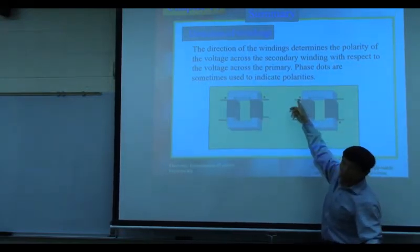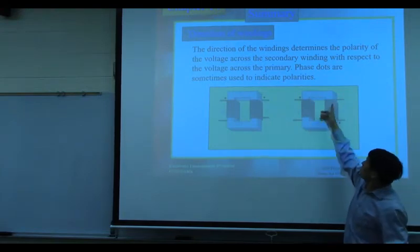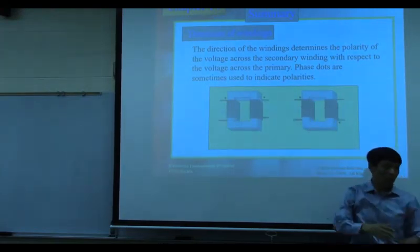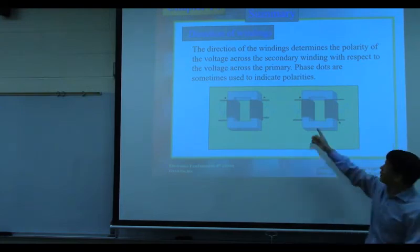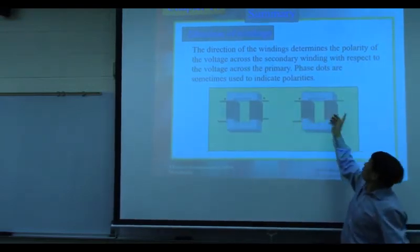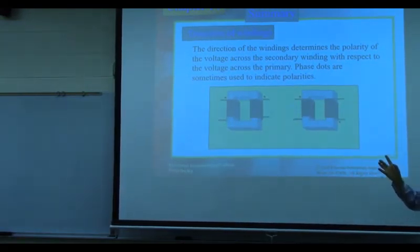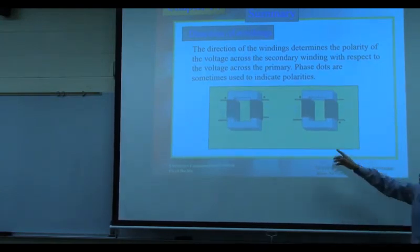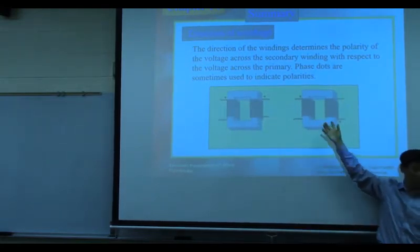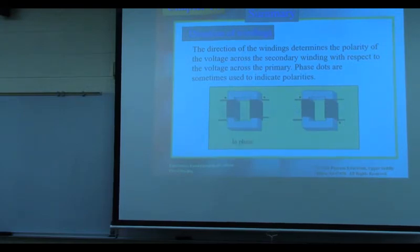In another configuration, the dot mark on one terminal and the absence on the corresponding terminal means those two points are out of phase — that is, 180 degrees out of phase. If one goes up, the other goes down. When using a transformer, you need to look at the dot markings to determine whether you want in-phase or out-of-phase voltage, and connect accordingly.